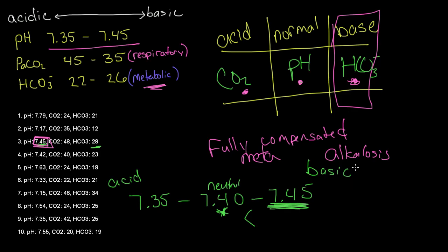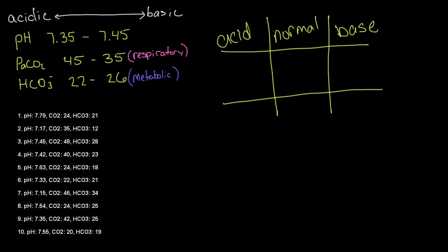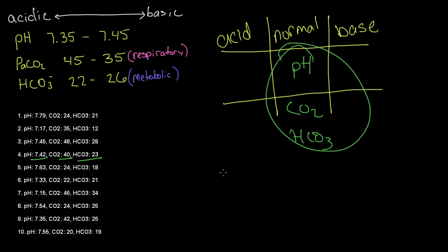We'll do a couple more of these — this is the type students usually have the most trouble with. Number four: our pH is 7.42, which is normal, so pH goes in the normal column. CO2 is 40, also normal. And our bicarbonate, 23, is also normal. Since all of our values are normal, this ABG is normal — there's nothing wrong with it. This is probably a healthy individual, at least as far as you can tell from their ABG reading.